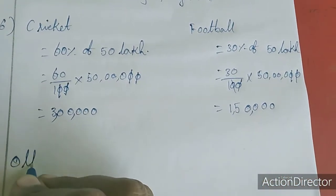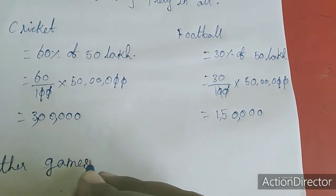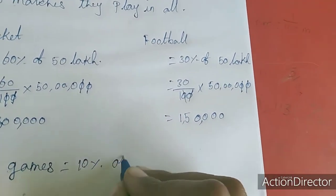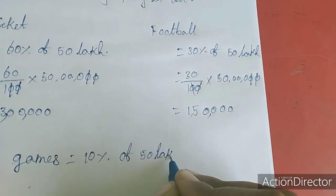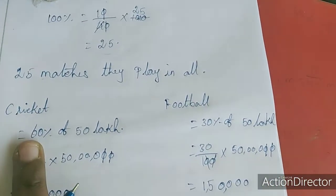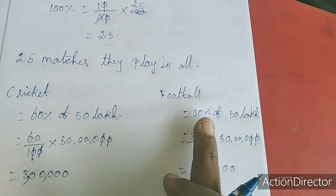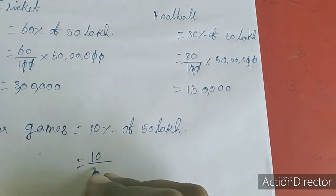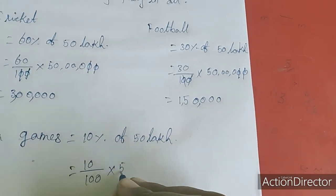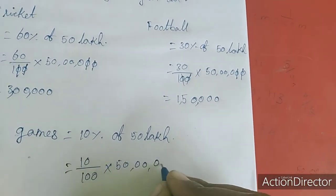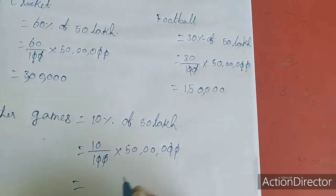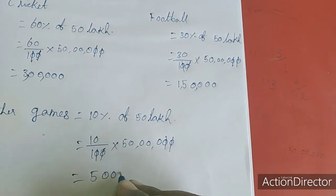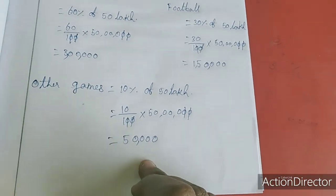Other games: 10% of 50 lakh. 10 by 100 into 50 lakh. 10, 00, 00 cancel. 5, 2, 3, 4, 0. So 50,000.